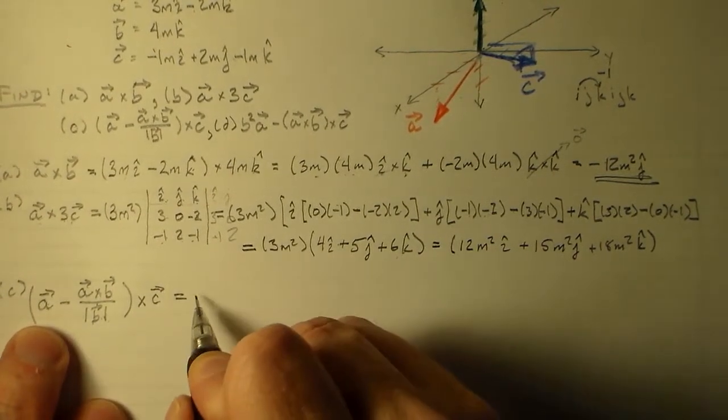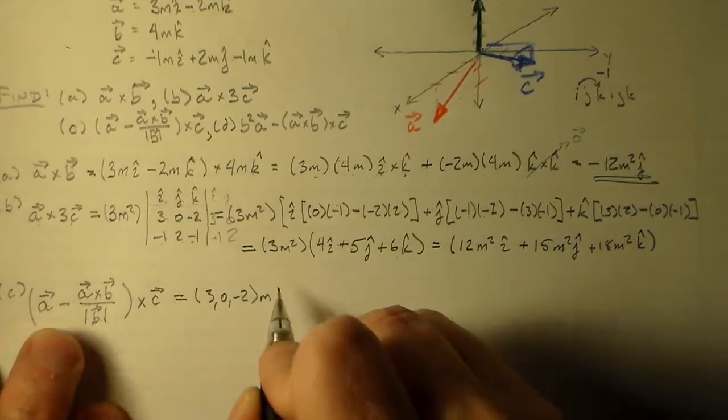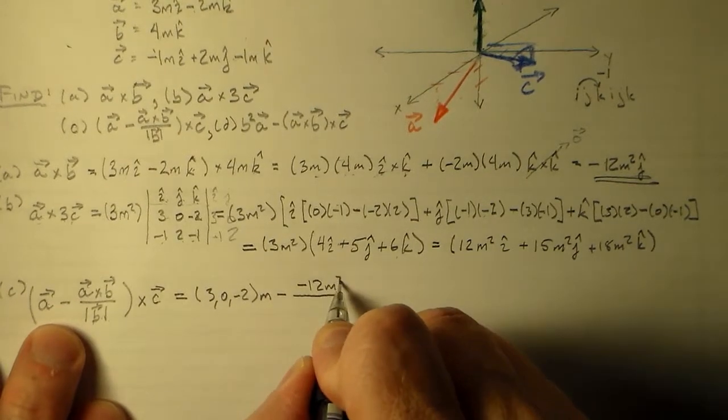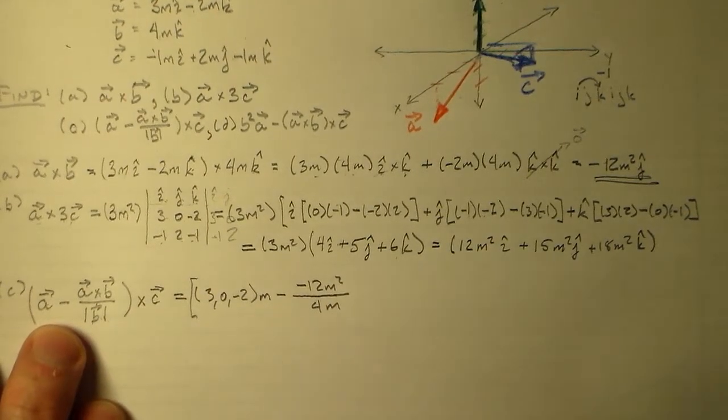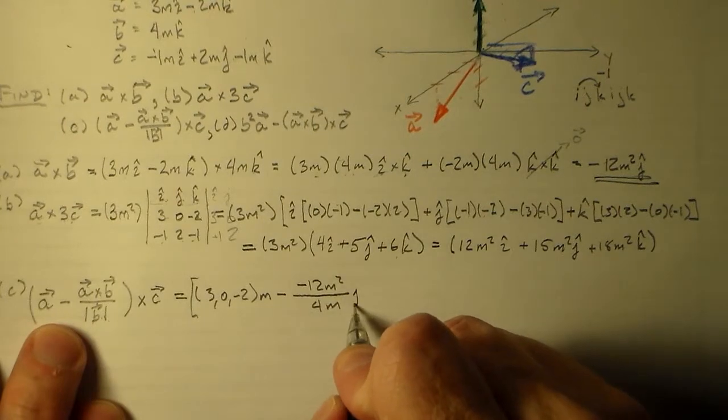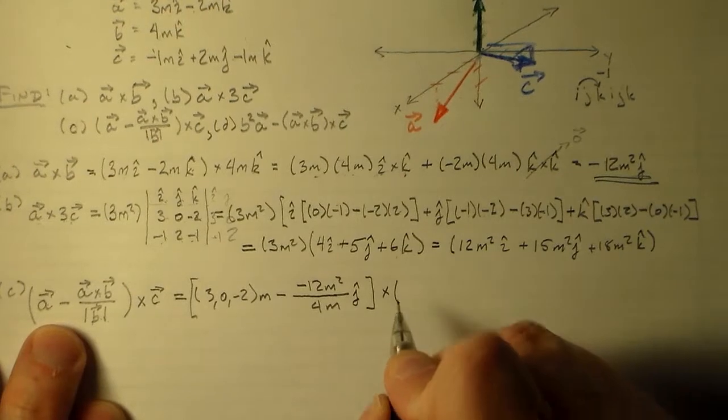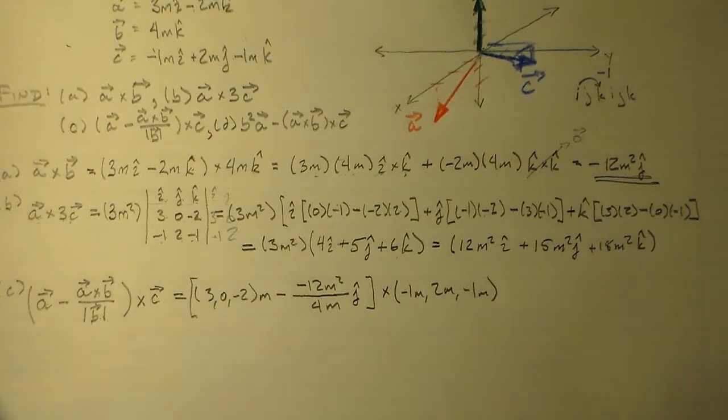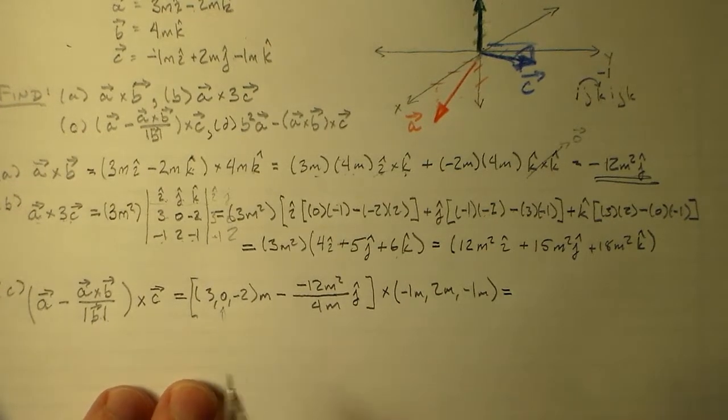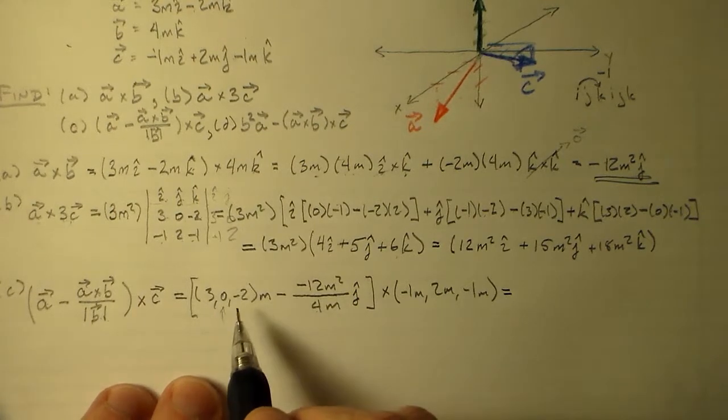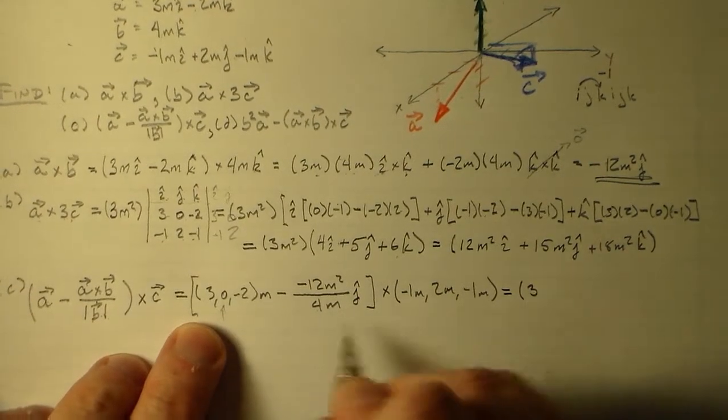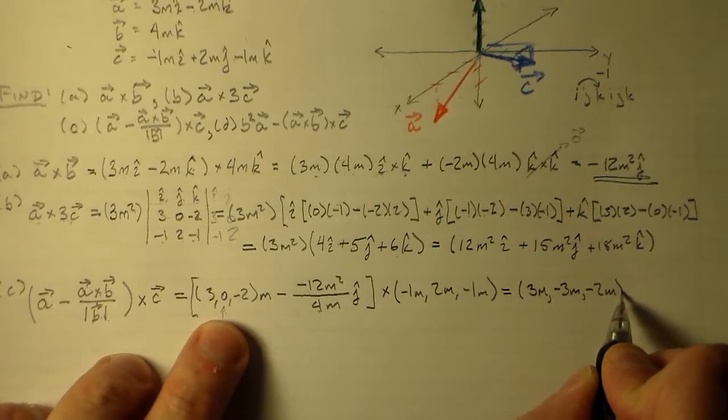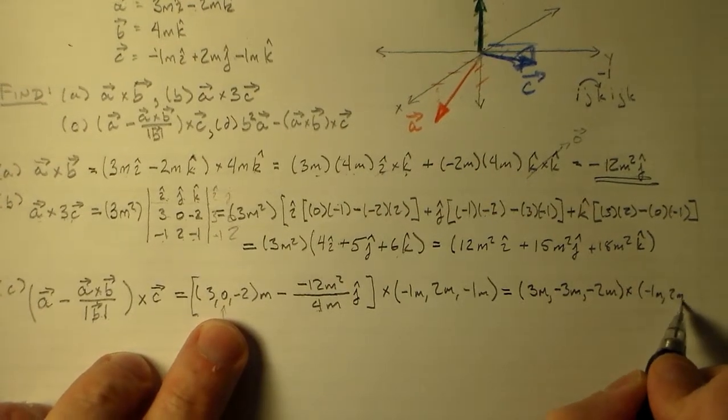So I've gone ahead and added that in and then I multiply by c and we end up with something amazing. I'm sure you'll agree when we're done with this. So now a is 3 0 minus 2 meters and we have that minus a cross b, which we fortunately have already done. So that's minus 12 square meters divided by 4 meters, right? And that's in the j hat direction. Okay, good. Confusing myself. And c is minus 1 meter, 2 meters, minus 1 meter. Oh, look, I've mixed all the notation up. Isn't that insane? I'm insane. Okay, so j is actually this one here. So whatever this is, is added to the 0. Oh, that's going to be okay. So we have 3 plus minus 3 meters and minus 3 meters here, right? And then the minus 2 meters here. And then we cross that with minus 1 meter, 2 meters, minus 1 meter.